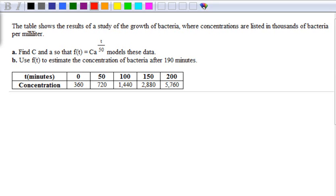Find C and A so that f(t) equals C times A to the t over 50 models this data. So that is the formula that you need to model any exponential growth or decay.